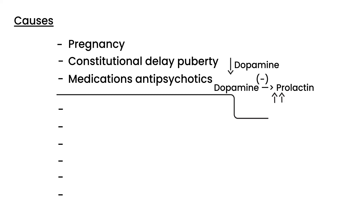Next we have PCOS — polycystic ovarian syndrome. PCOS involves an abnormality in hormones, in particular FSH and LH. So even though it is its own unique entity, it can really be grouped as a hormonal disorder.